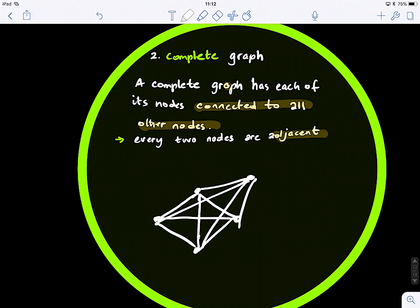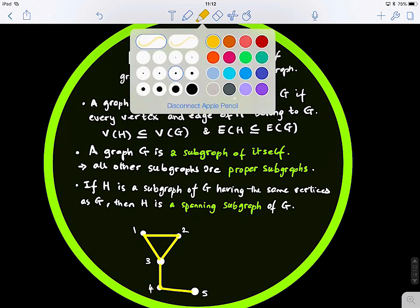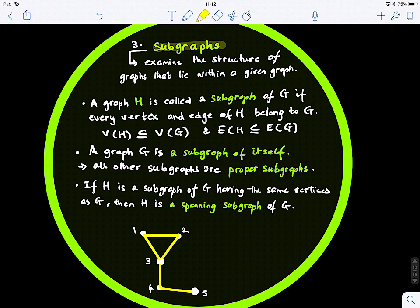Now, subgraphs. What is the definition of a subgraph? So we've seen graphs, different types of graphs, weighted, like weighted, binary, directed, undirected, simple, complete, subgraphs. It examined the structure of the graph that lie within a given graph. So it's like just a sub, like an extraction of a graph. It's a subgraph. It's like so natural, right? Very intuitive.